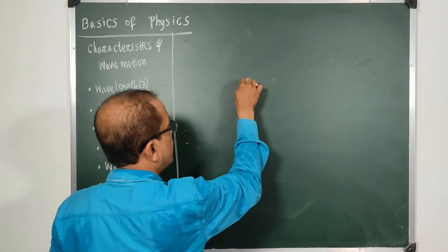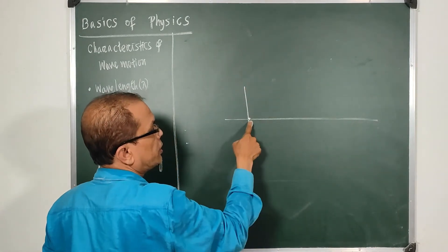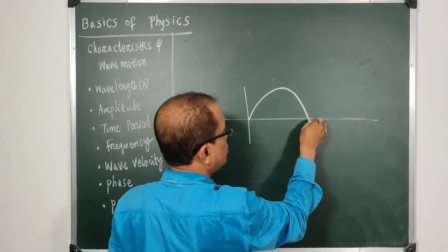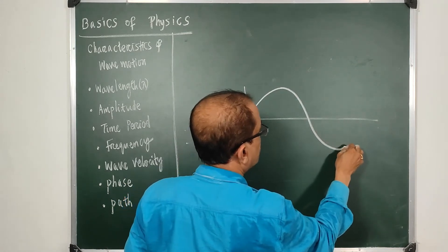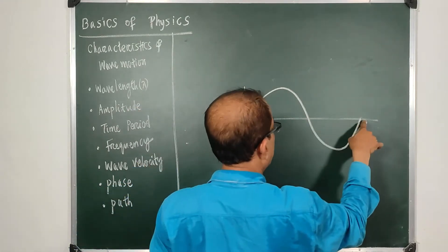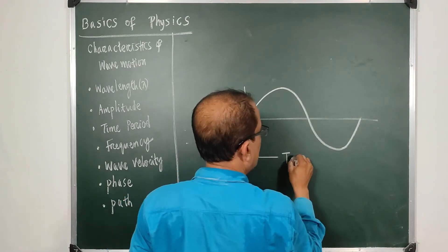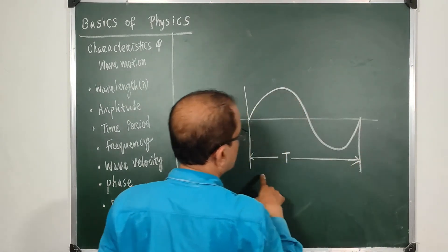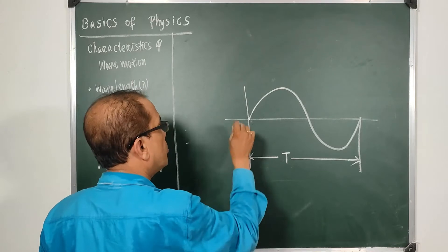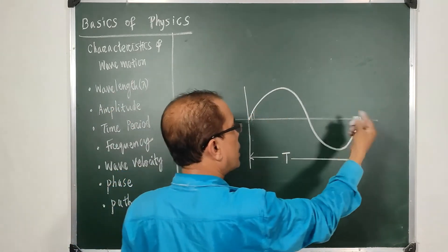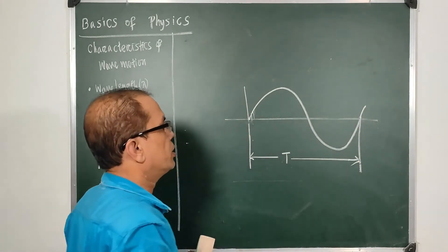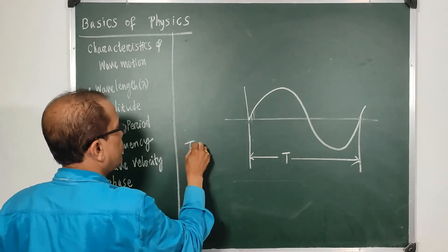Next we go for time period. Every wave, as it oscillates, starts from a point at t = 0, reaches the amplitude, comes back to zero displacement, goes to the other extreme amplitude, and returns again. The time required to complete this one full oscillation is called the time period T. It is the time for the wave particle to repeat the same state.